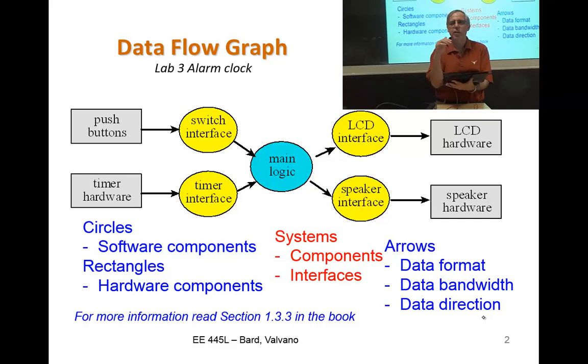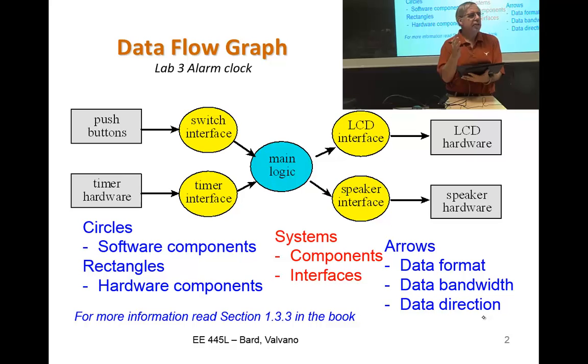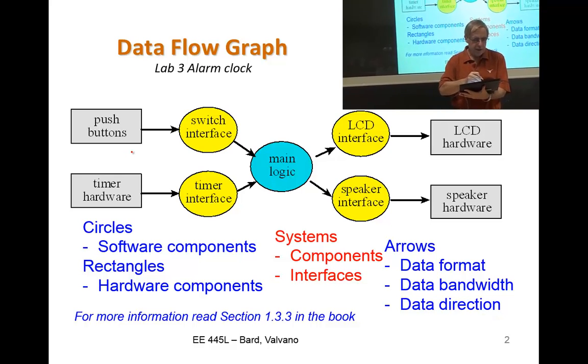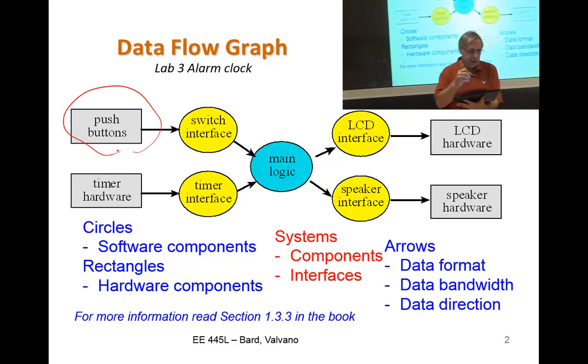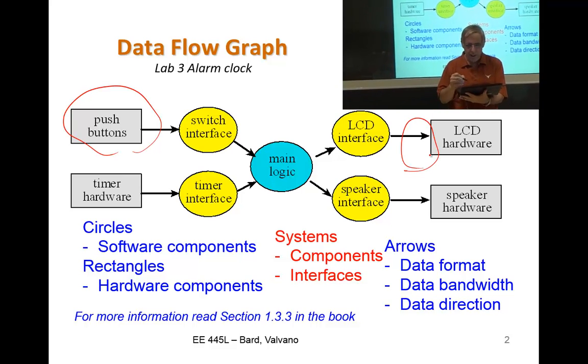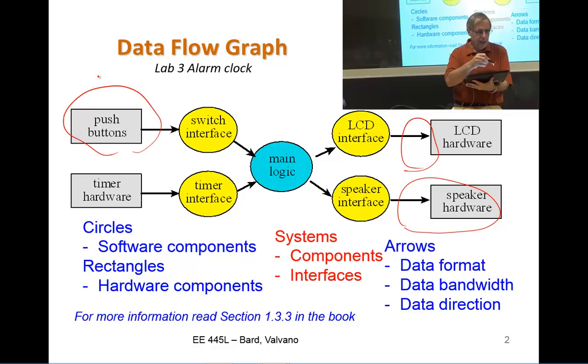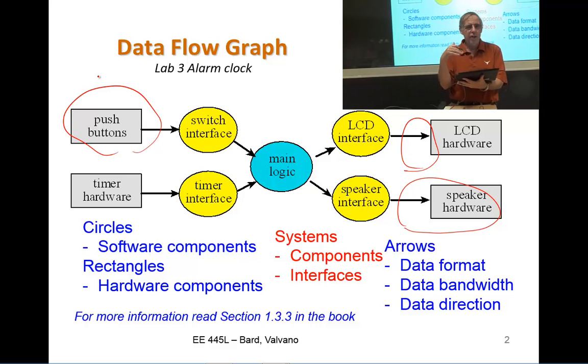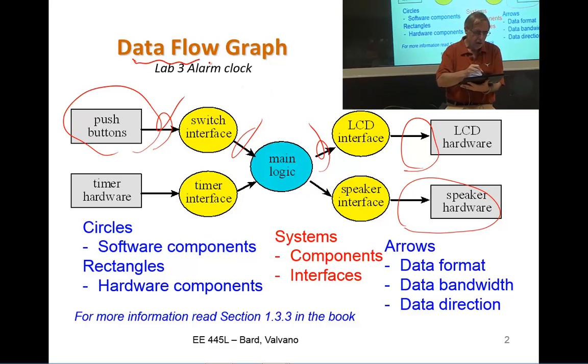Data flow graph is one of our design documents. It looks a lot like the circuit diagram. If you were to draw a circuit diagram of your embedded system, you would see things like buttons, circuits, inputs and outputs. This is the data flow graph for lab three, which is an alarm clock.